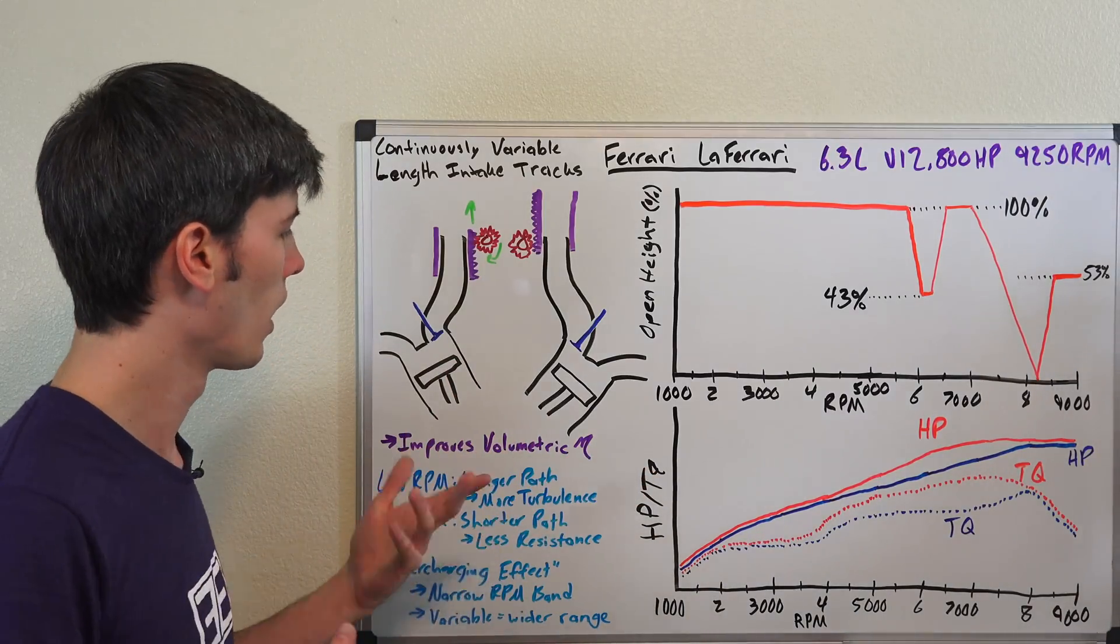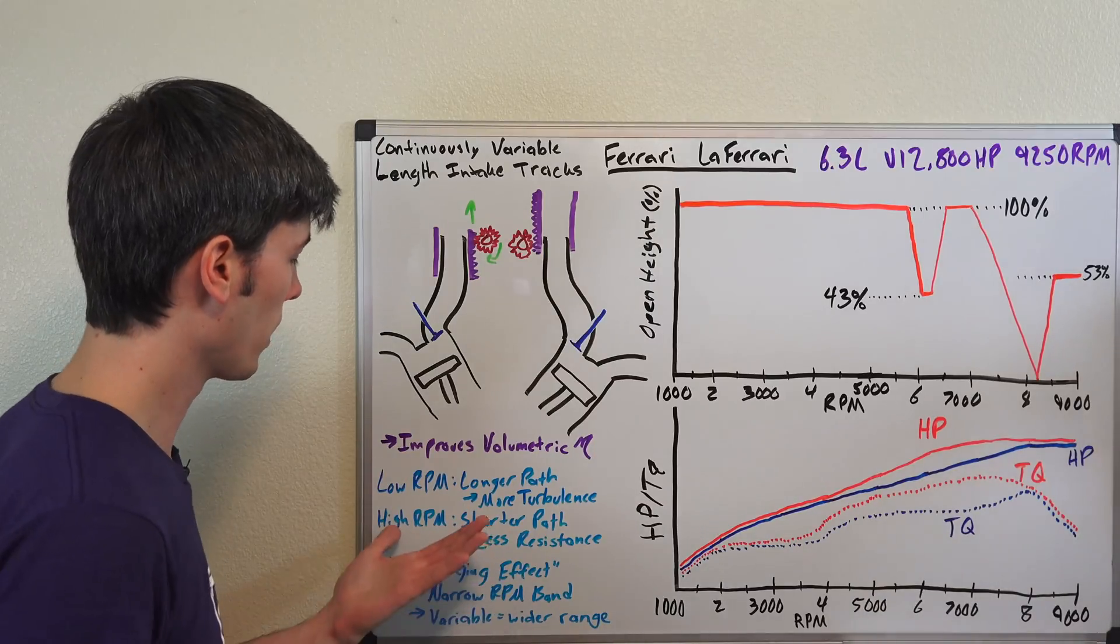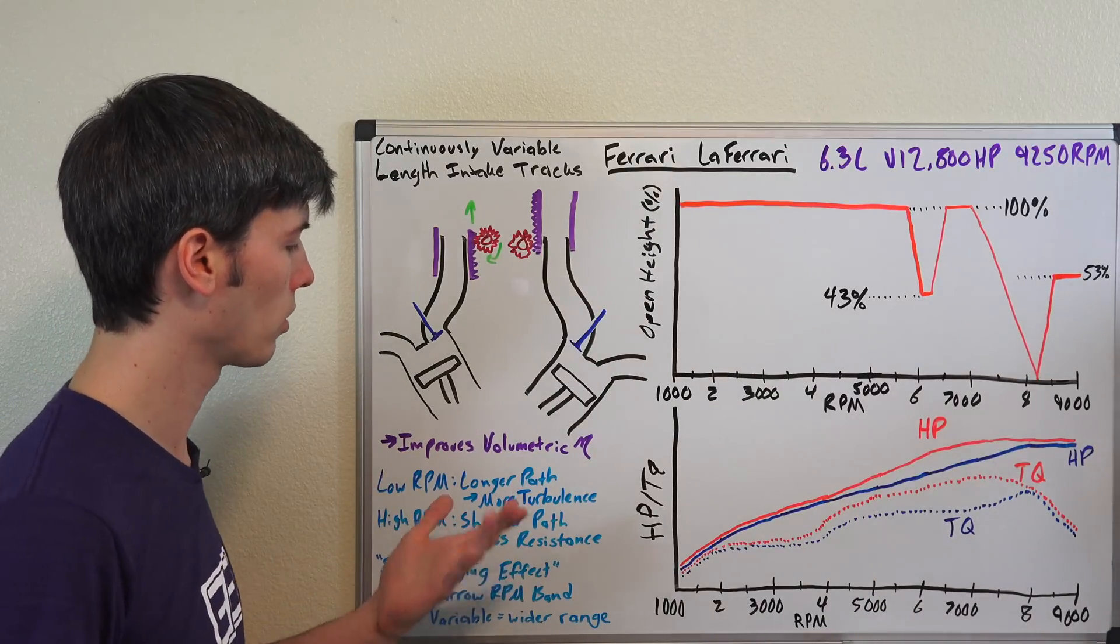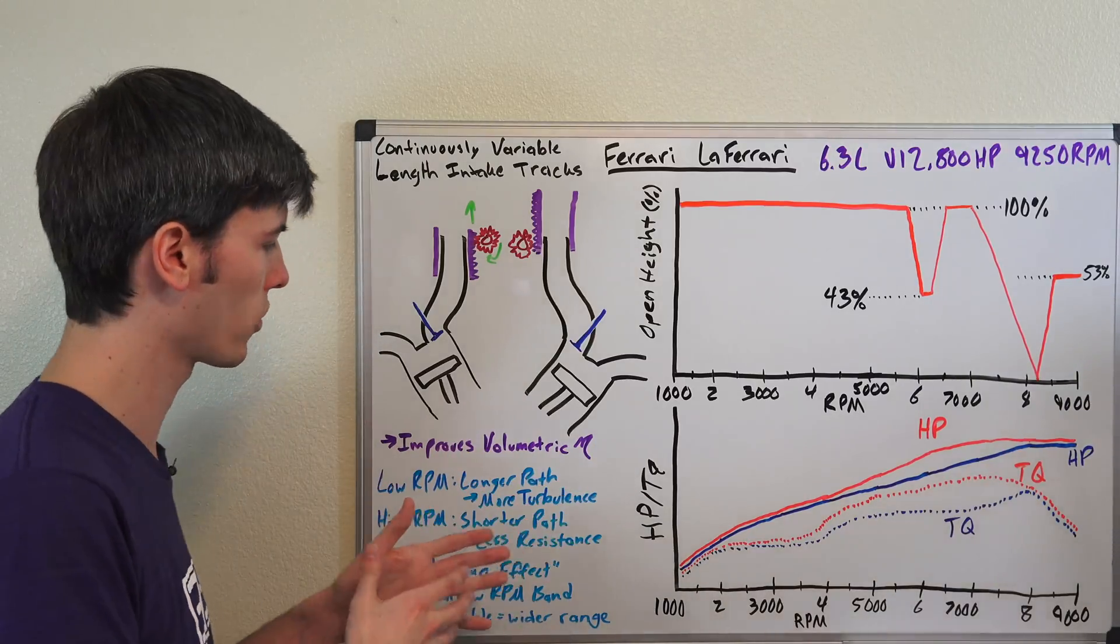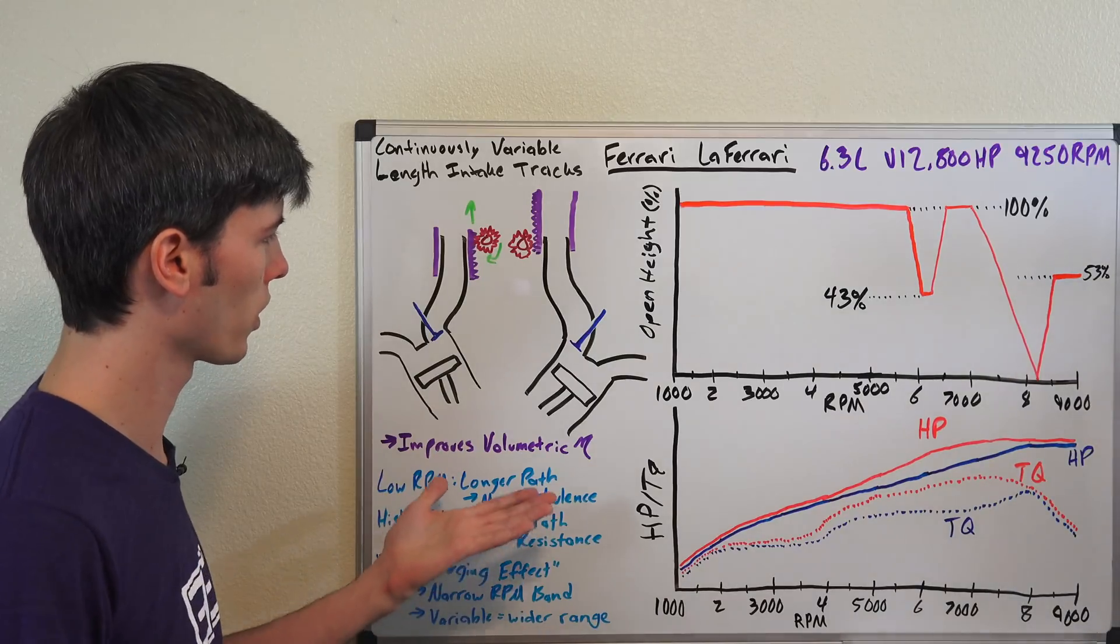At those lower rpms when you don't need quite as much air, now once you get to the higher rpms with a higher load, you might want a shorter path because you're going to have less resistance. It's going to be easier for that air to get into the engine and so you're going to be able to make more power by shortening that path.